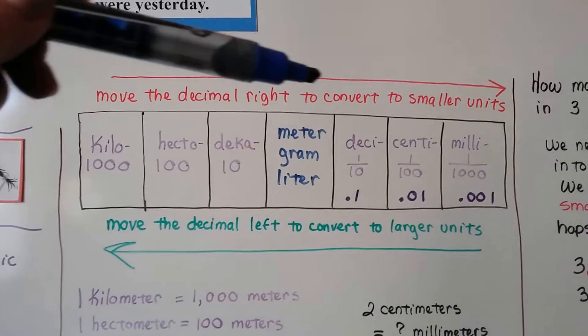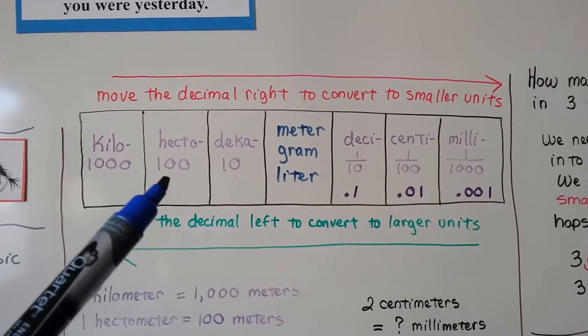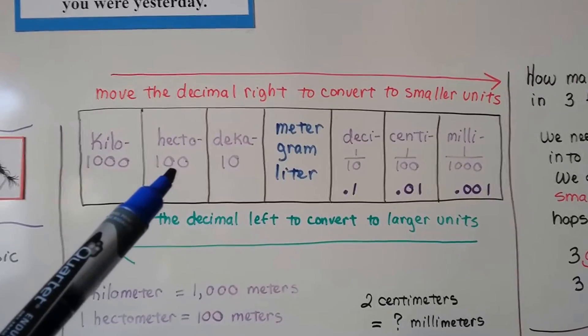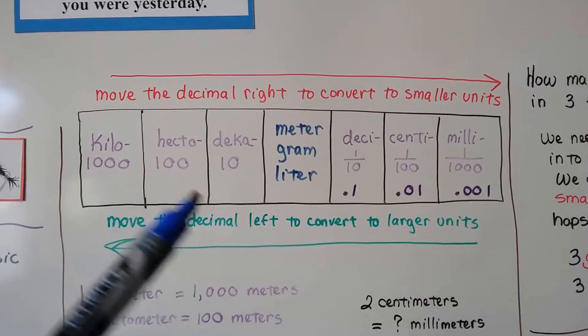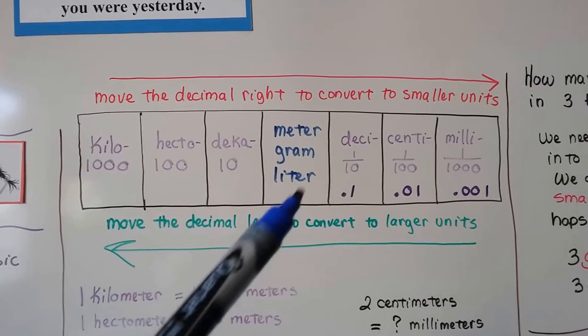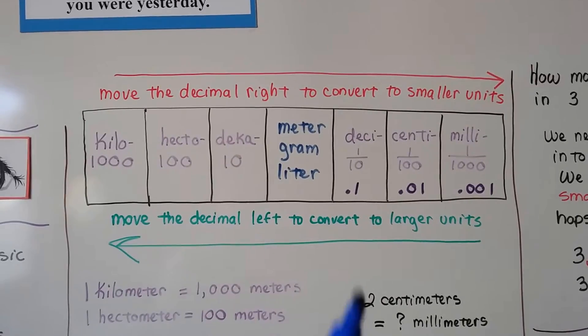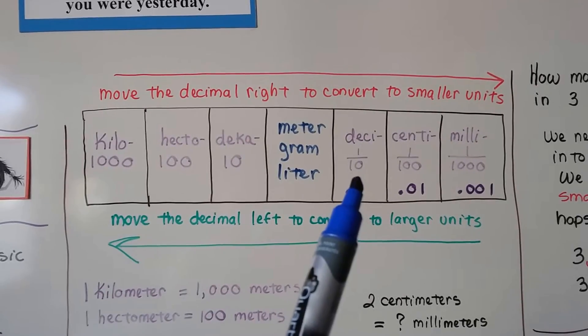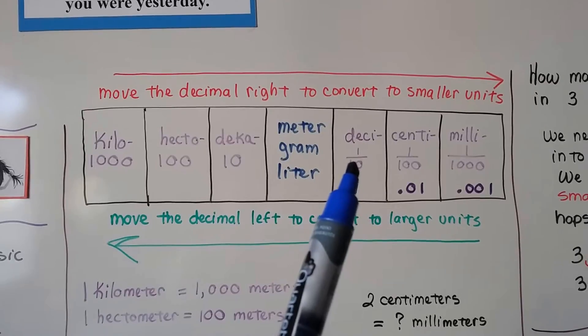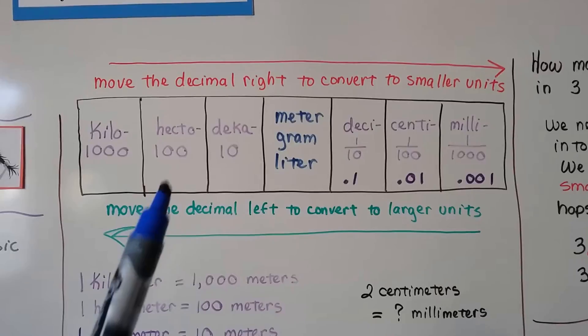We move the decimal to the right if we want to convert to a smaller unit. So let's say we're at hecto and we want to convert it to centi. Well, that's a smaller unit. Centi is a smaller unit we're converting it to, so we're going to move the decimal, these hops, to the left. If we're at deci and we want to convert it to kilo, then we're going to hop to the right because we're moving to a larger unit.